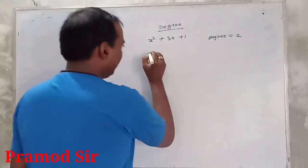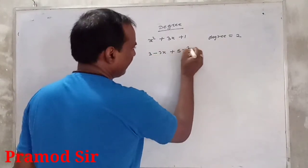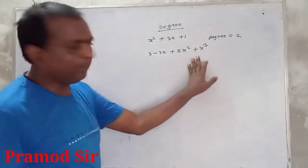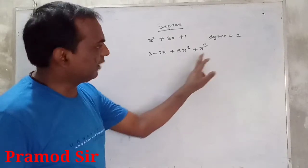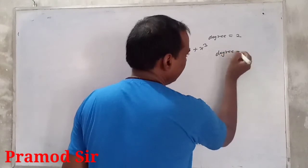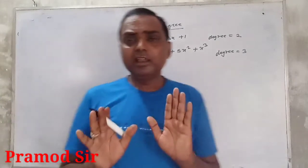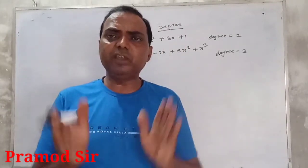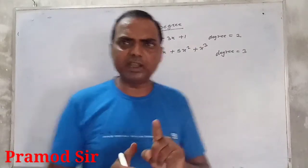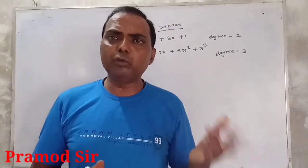Similarly, 3 − 2x + 5x² + x³ — here one variable, max power is 3, so degree is 3. Yeh tab hai jab polynomial mein sirf one variable use kiya gaya ho — to maximum power hi us polynomial ka degree ho jaata hai.